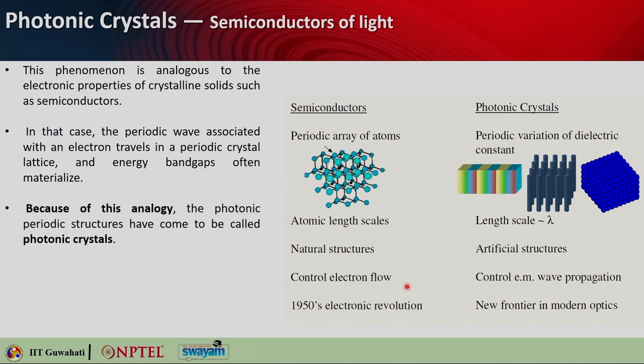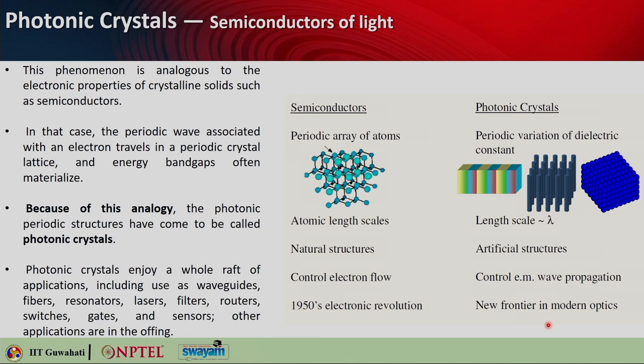Semiconductors allow you to control the electron flow, whereas photonic crystals allow you to control the flow of light. In 1950, semiconductors revolutionized electronics, as you can see from today's electronics industry. Photonic crystals are relatively new and are the new frontiers in modern optics. Photonic crystals enjoy a whole range of applications including waveguides, filters, fibers, resonators, lasers, routers, switches, gates, sensors, and other applications.